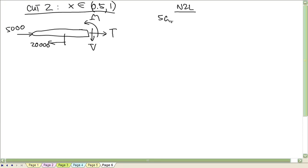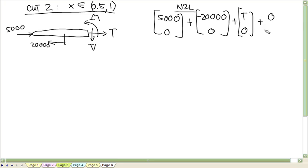So Newton's second law says 5,000, 0, plus negative 20,000, 0, plus T, 0, plus 0, negative V, is equal to 0s. So the tension this time is positive 15,000. The shear force is still 0.